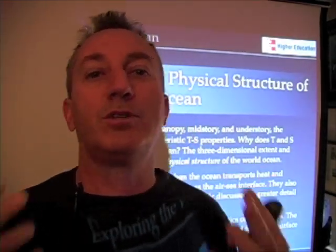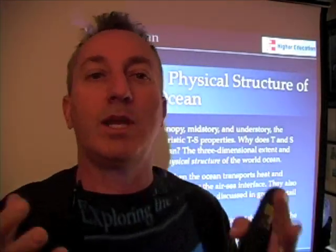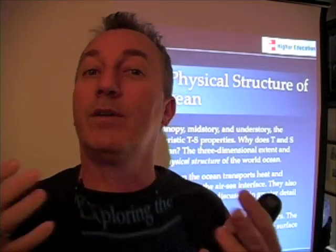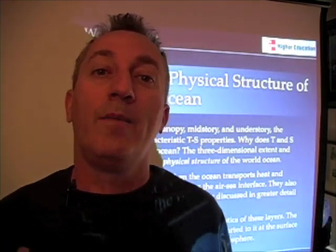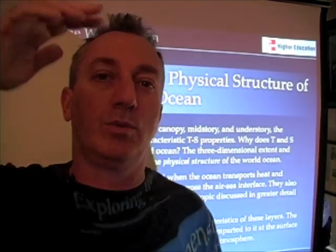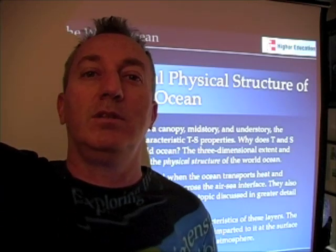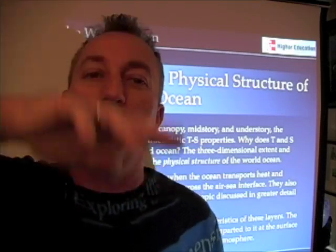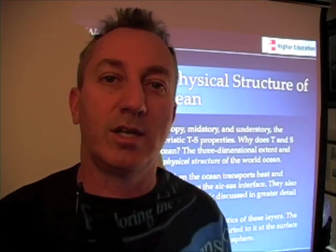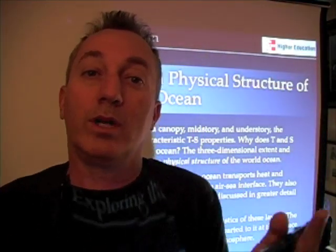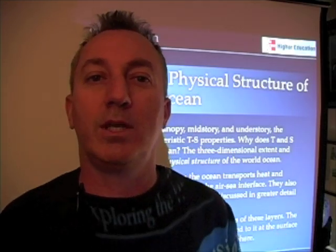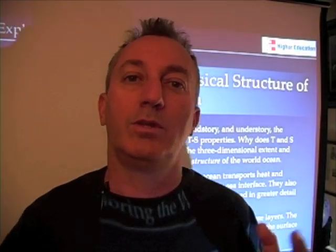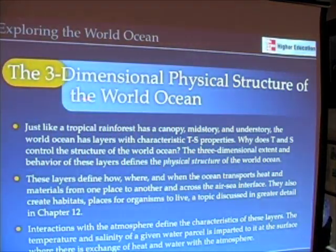Certain organisms prefer a certain temperature and salinity, and if those are changing, we're going to find different organisms. The physical structure of the world ocean — just like skyscrapers in New York City, a tropical rainforest, a kelp forest, or mountains and valleys — creates a three-dimensional framework for organisms to exploit and find places to live and reproduce. I call this the three-dimensional physical structure of the world ocean.